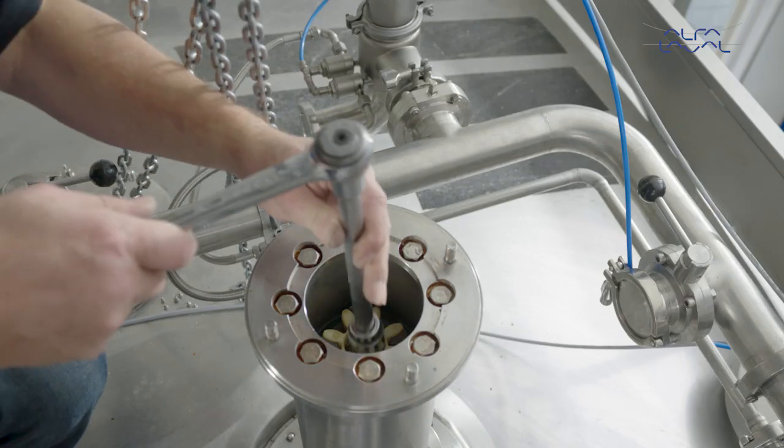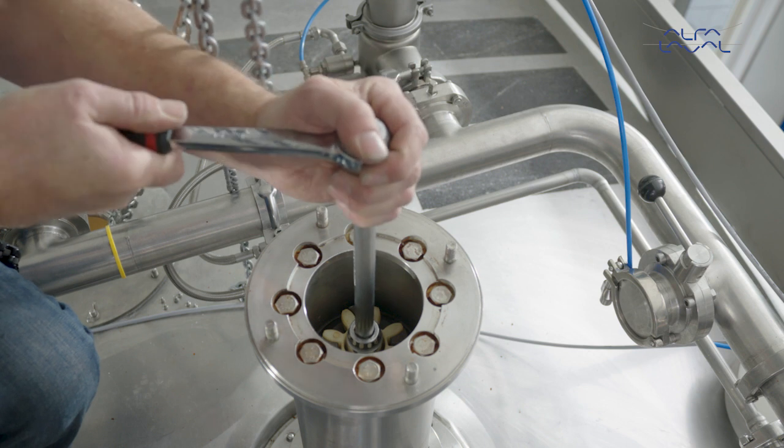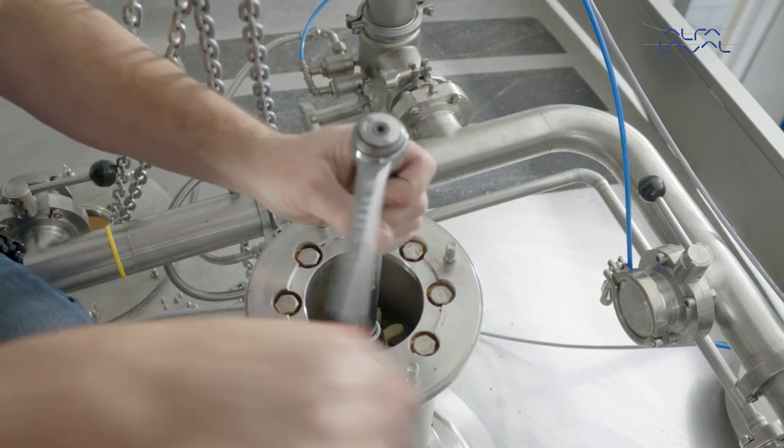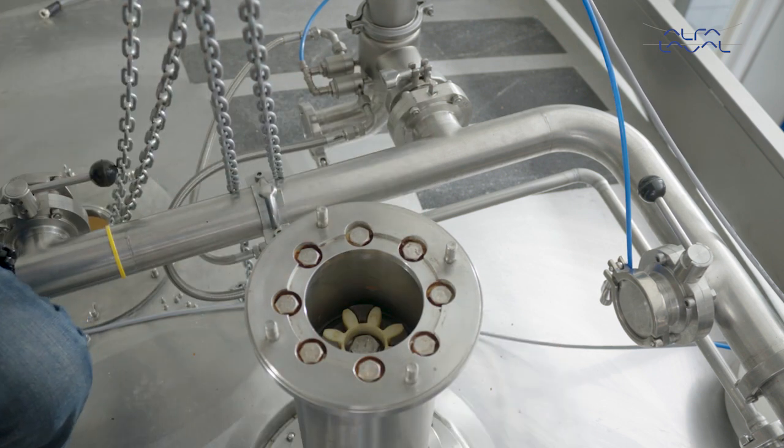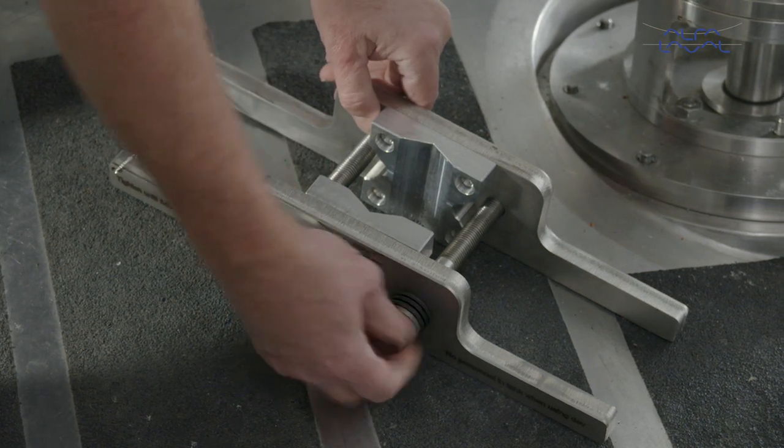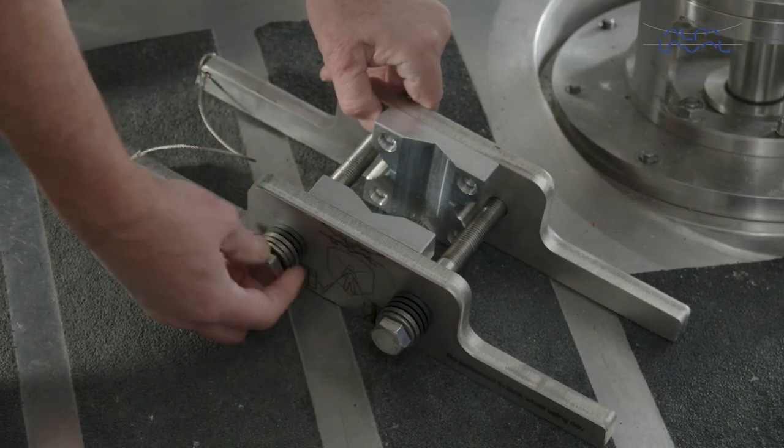Loosen the shaft bolt, but don't remove it. Dismantle the back plate by loosening both screws on the shaft retainer.